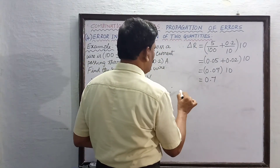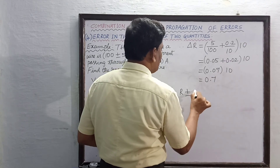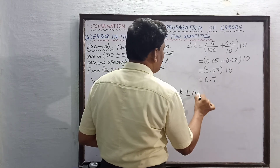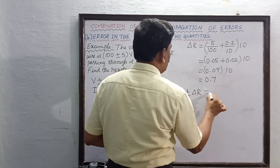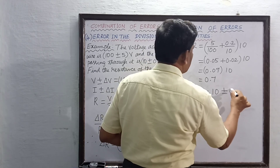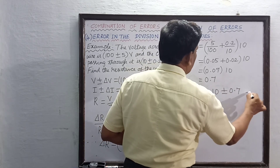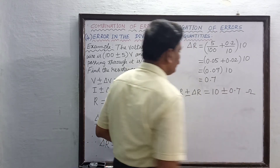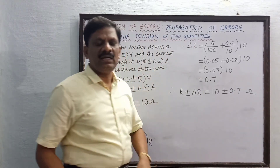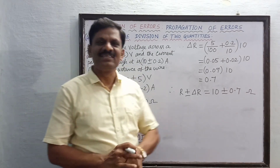Therefore, R plus or minus delta R is equal to 10 plus or minus 0.7 Ohm. This is the answer.